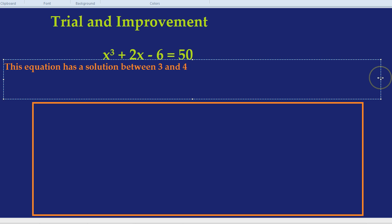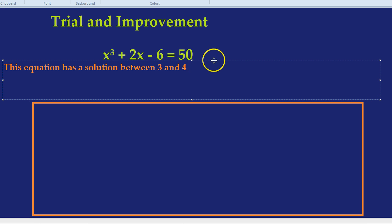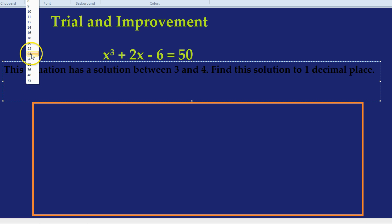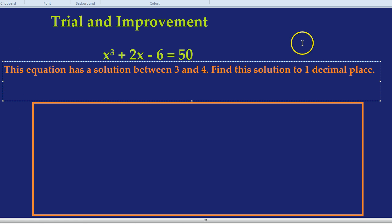So this equation has a solution between 3 and 4. Find this solution to one decimal place. And thank goodness they said one decimal place because if we had to find our answer even more accurately than that it would take quite a long time indeed. But one decimal place, I think we can manage that.